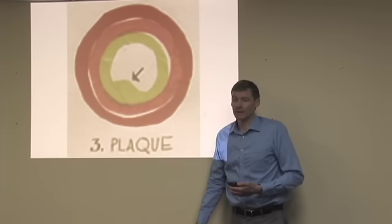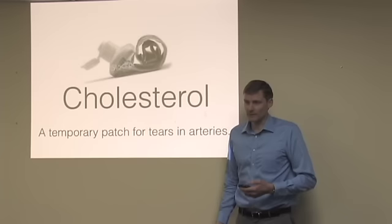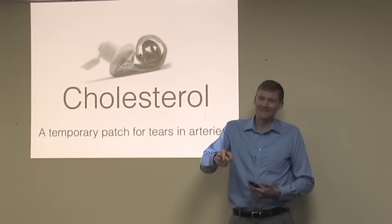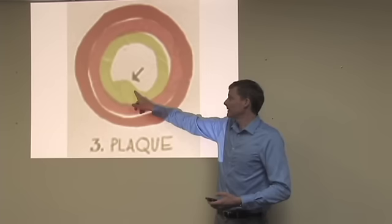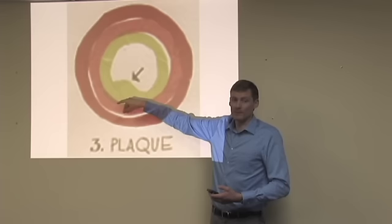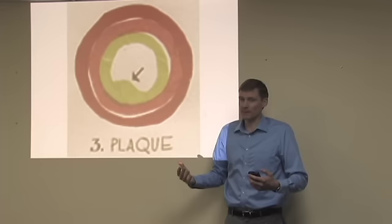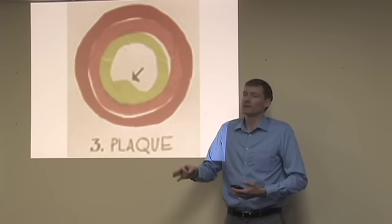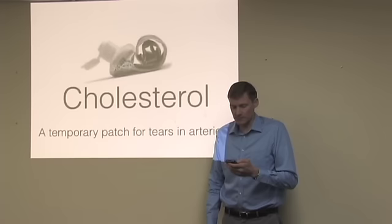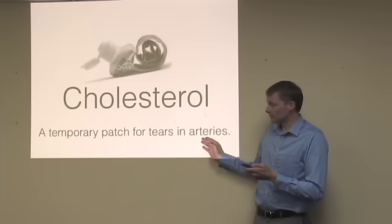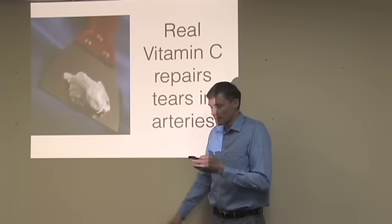So now you've got this tear, and then plaque forms where the tear occurred. What is the plaque? The plaque is cholesterol. Cholesterol is like toothpaste in the wall of your apartment — cholesterol does not belong there, but it ends up there because of the tear. It just gets stuck in there. Cholesterol is a temporary patch to repair the tear that is not being repaired because of a deficiency of vitamin C. Cholesterol is a temporary patch for tears in the arteries.